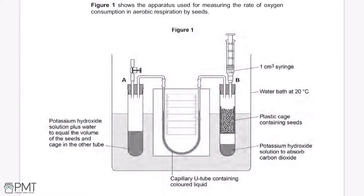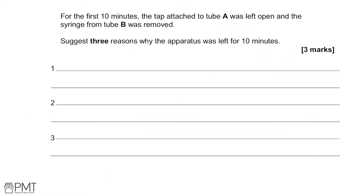Figure 1 shows the apparatus used for measuring the rate of oxygen consumption in aerobic respiration by seeds. For the first 10 minutes, the tap attached to tube A was left open and the syringe from tube B was removed. Suggest three reasons why the apparatus was left for 10 minutes.